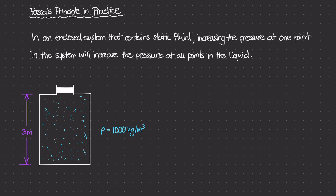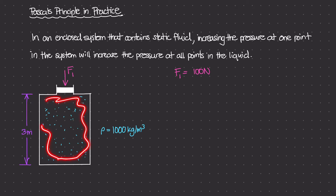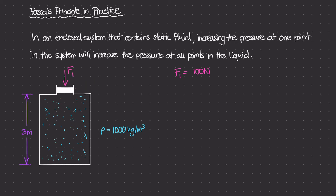If I go to the very top and apply some sort of force — let's call it Force 1, which is 100 newtons — we're applying 100 newtons of force to the top of this container onto the little piston. The area of the piston itself, which I'll call Area 1, is going to be 0.25 meters squared. You can assume it's a circular piston with this cross-sectional area.